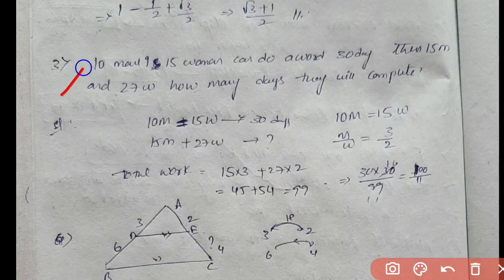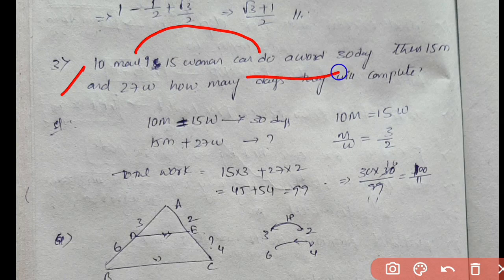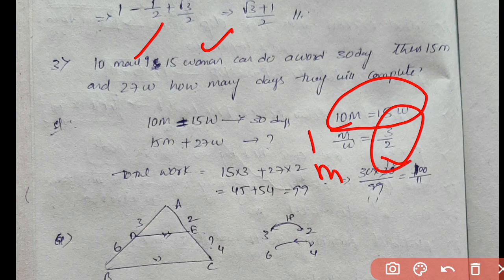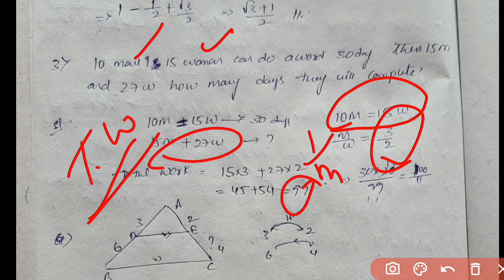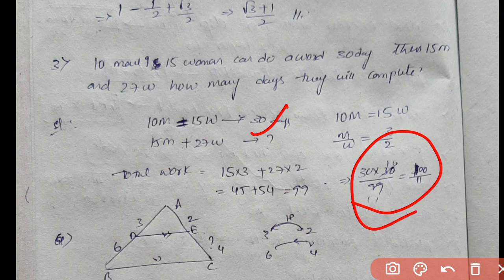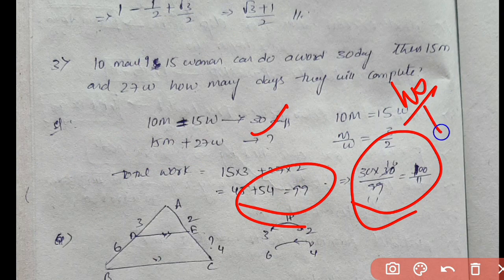Next question: 10 men and 15 women complete work. We find the efficiency ratio of 1 man to 1 woman as 3:2. Total work is 99. They complete it in 30 days — 30 divided by 99 gives 100 divided by 11.